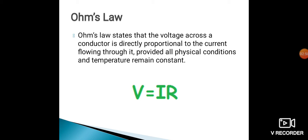In the previous unit, we learnt that as the temperature of the conductor increases, for some materials resistance also increases and for some materials resistance decreases. So, that factor we have to keep in mind — the temperature of the conductor should remain constant. The formula for Ohm's law is given as V is equal to I into R. Here V is the applied voltage, I is the current flowing in the circuit, and R is the resistance of the material, which is the proportionality constant.